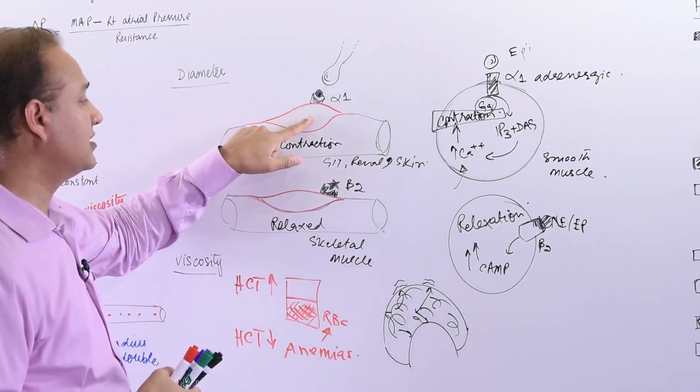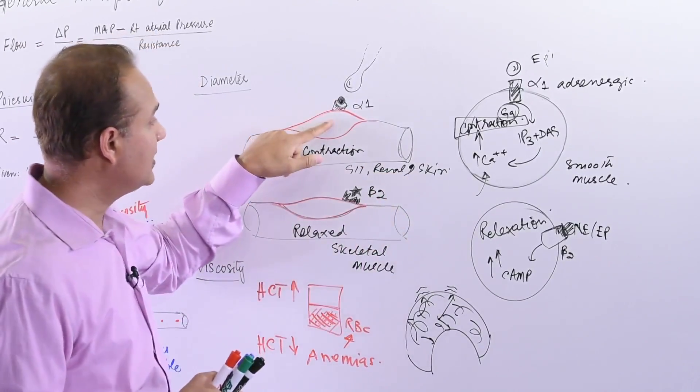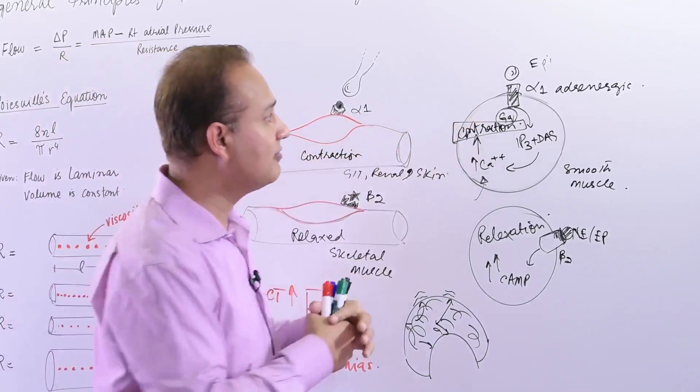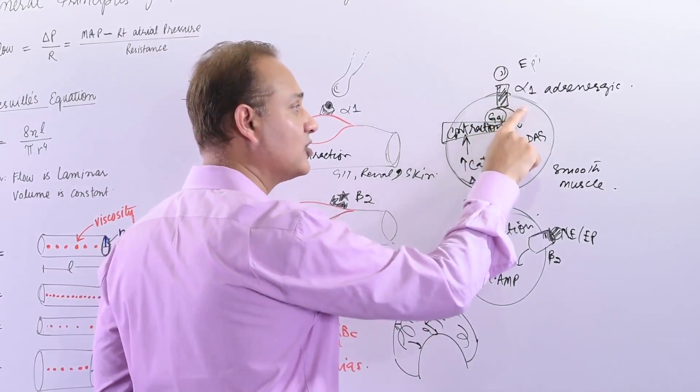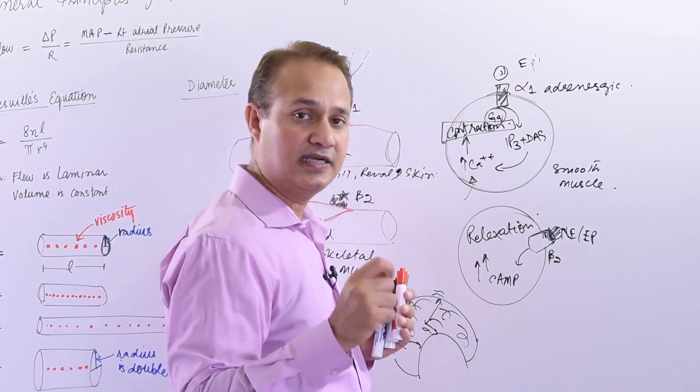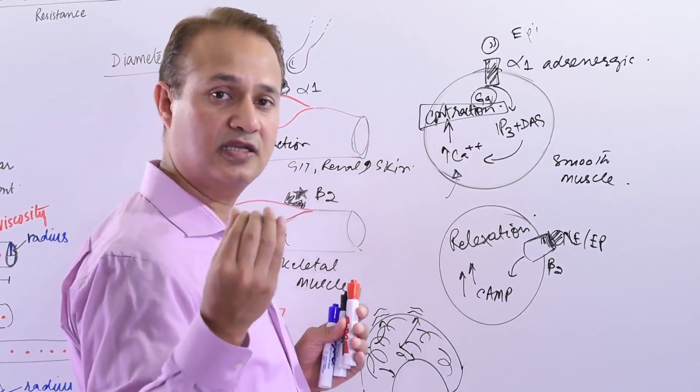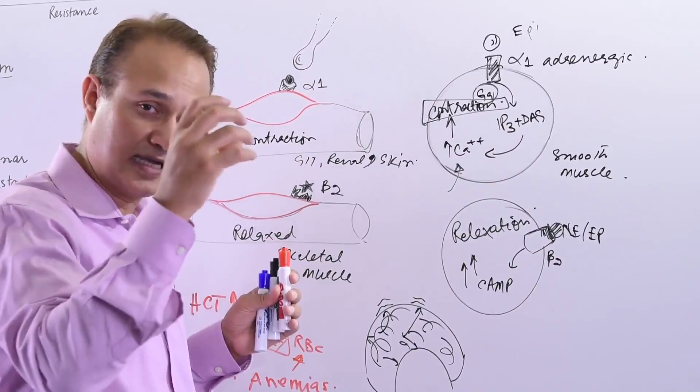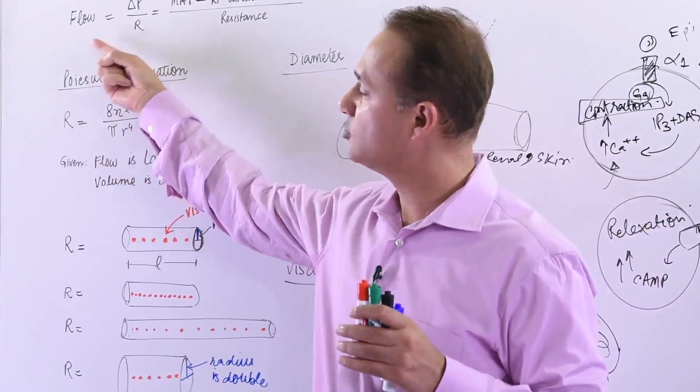Now how does that change in diameter occur? Let's look at a smooth muscle here on a GIT, renal or skin blood vessel. Here it is, it is supported by alpha-1 adrenergic receptors. What happens with the alpha-1 adrenergic receptor is that when sympathetic supply stimulates them, that causes the alpha-1 receptor to be stimulated, that causes IP3 and diacylglycerol, DAG to increase, that increases the calcium inside the smooth muscle and the smooth muscle contracts. So what happens is with the sympathetic supply, the smooth muscles will contract. The diameter would reduce. Reduced diameter will mean increased resistance. That would mean reduced flow.